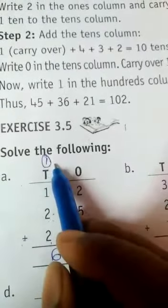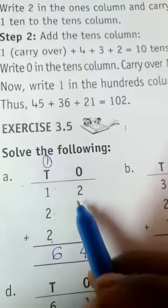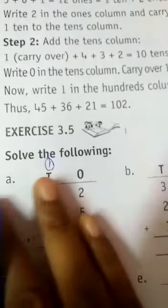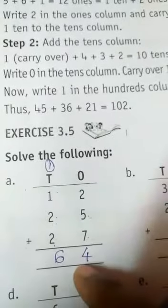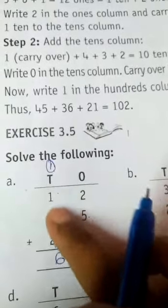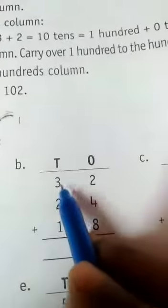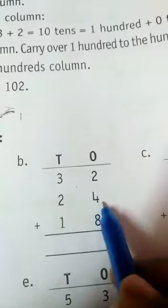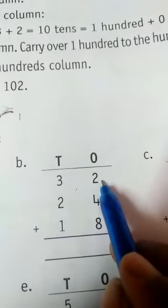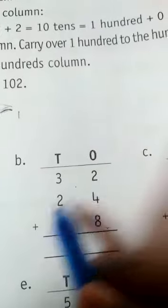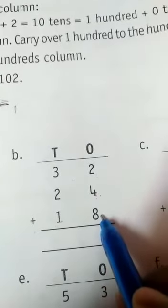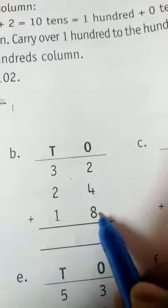So 3 groups of 2-digit number addition with the carryover regrouping. And 2 plus 4 is equal to how much? 6.